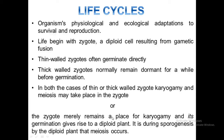On the other hand, if these processes become separated in time and space, the zygote may remain a place only for karyogamy, and its germination gives rise to a diploid plant, while meiosis will occur during sporogenesis. The interpolation of a diploid somatic phase between karyogamy and meiosis probably makes the individual more stable genetically as well as physiologically, for greater adaptability and survival.